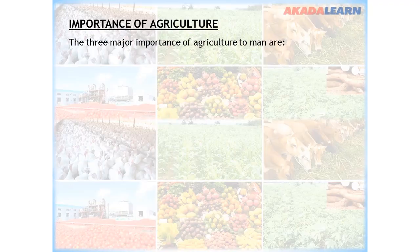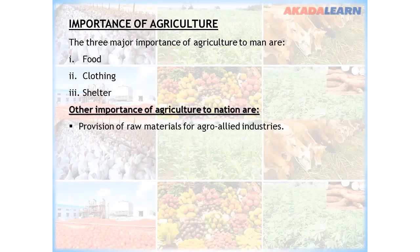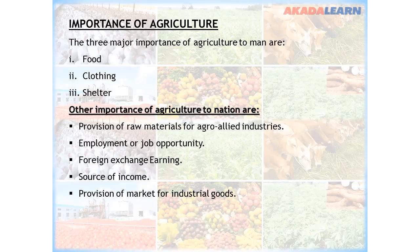The three major importance of agriculture to man are: provision of food, provision of clothing, and provision of shelter. Other importance of agriculture to the nation are: provision of raw materials for agro-allied industries, provision of employment or job opportunities, provision of foreign exchange, it serves as a source of income to the nation, provision of market for industrial goods, and provision of revenue.